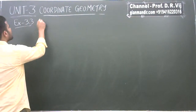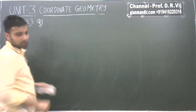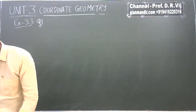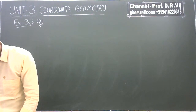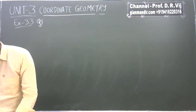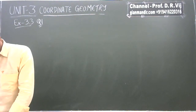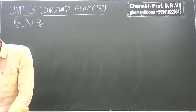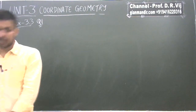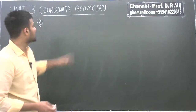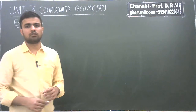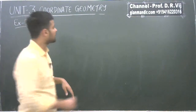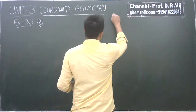Exercise 3.3, question number one. The first question says: in which quadrant or on which axis do each of these points lie? Verify your answer by locating them on a Cartesian plane. They have given us some points and we must identify which quadrant they lie in. Let's draw a Cartesian plane.